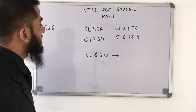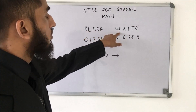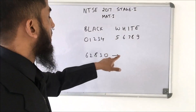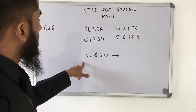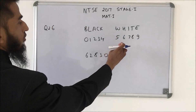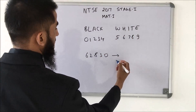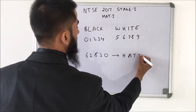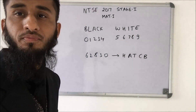The question says that these words are correlated with these numbers, so what will 62830 represent? Correlating 6 with H, we get H, then A, T, C, and G. This is a straightforward substitution question.